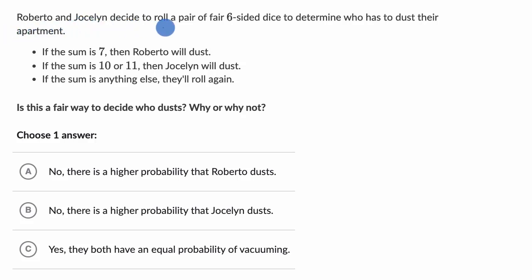We're told that Roberto and Jocelyn decide to roll a pair of fair six-sided dice to determine who has to dust their apartment.